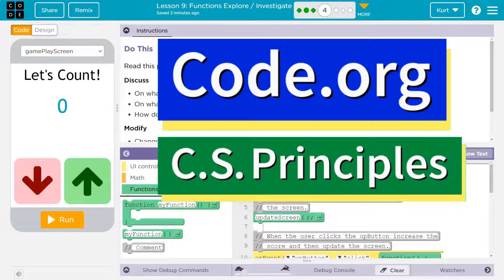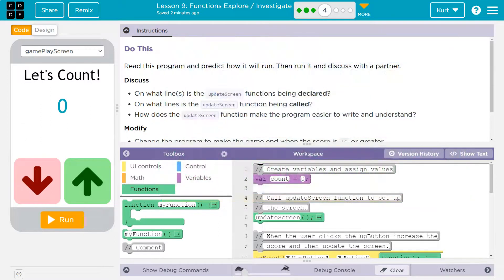This is Code.org. Let's see what we're working on. Read the program, predict how it will run, then run and discuss with your partner. I don't have a partner, so guess what? It's you. Hi, partner.